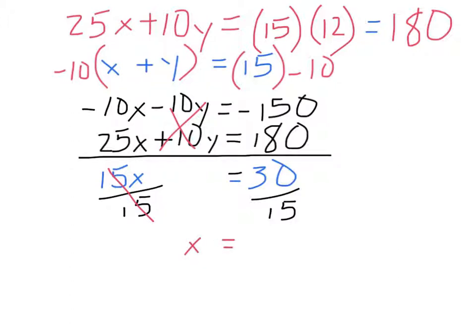So x over here, and 30 over 15 is 2. Then we want to figure out what y is, and the easiest place is x plus y equals 15. So if x is 2, and something else has to make it equal 15, this would be 13. 13 plus 2 is 15. We can also say we're solving for y, so minus x on both sides. 15 minus 2 is 13.